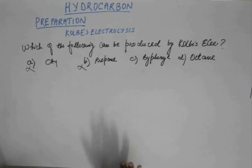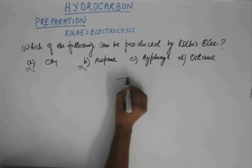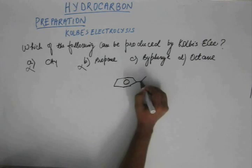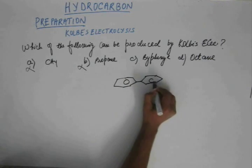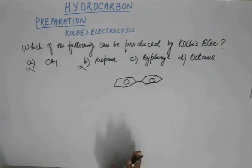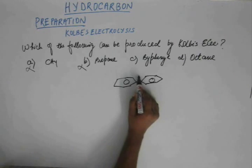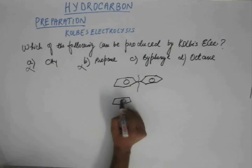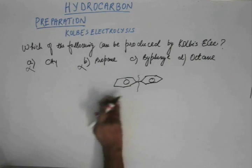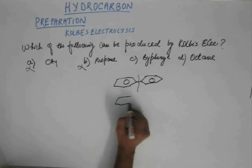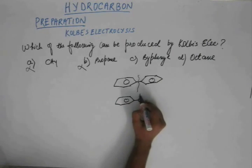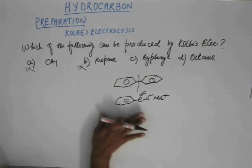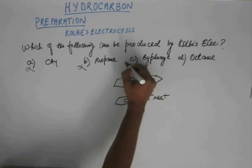Biphenyl is a symmetrical molecule having this structure. And we saw previously that biphenyl can be produced by Kolbe's electrolysis using benzoic acid. We can produce biphenyl so biphenyl is the right option.